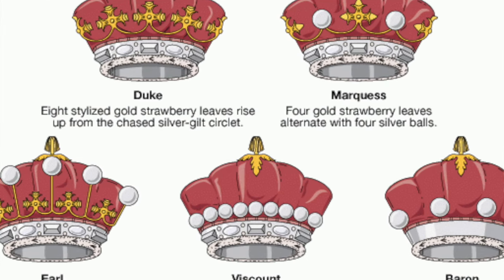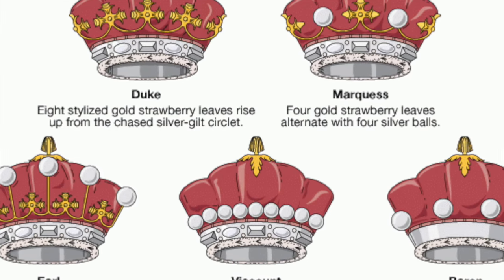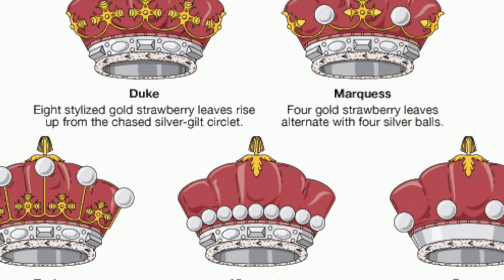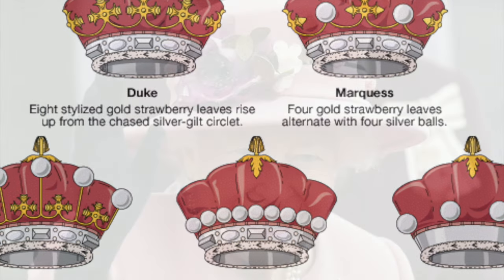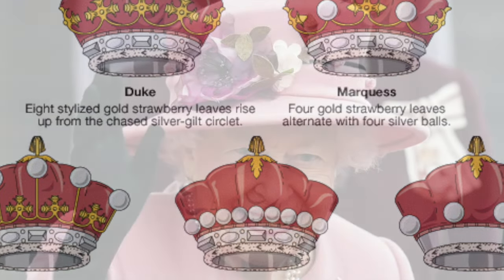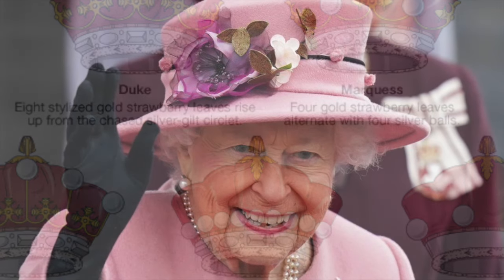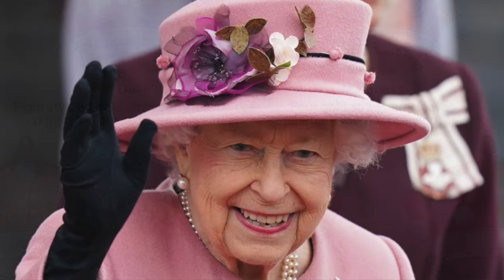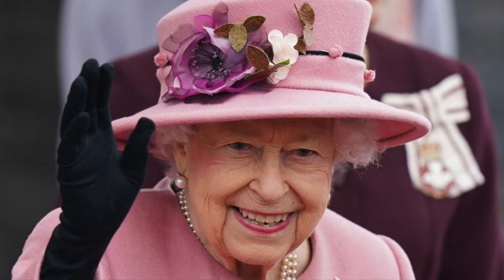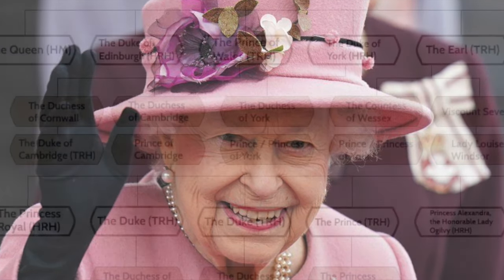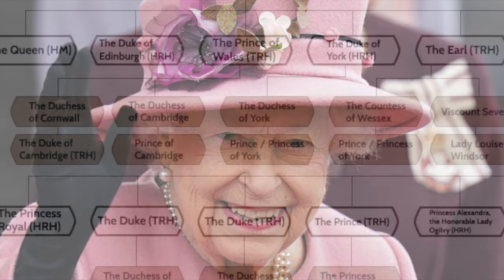Here are some fun facts about English titles. The key figure in the English aristocracy is the monarch. Relatives of the king or queen inherit a title at birth.